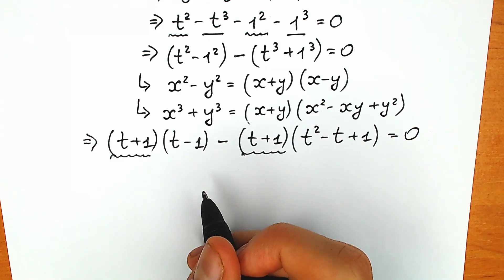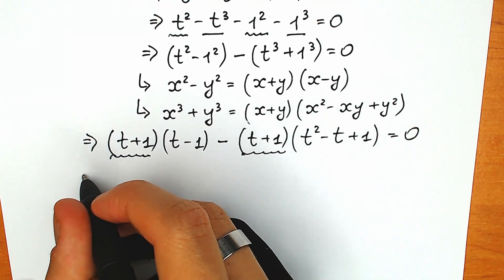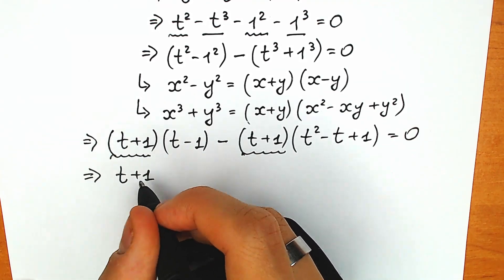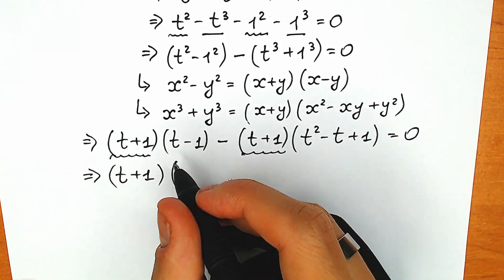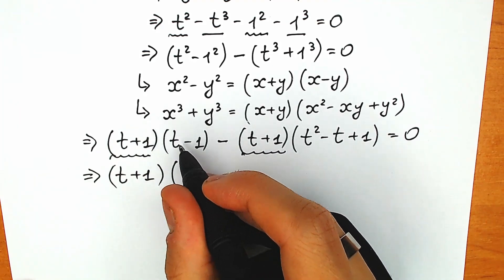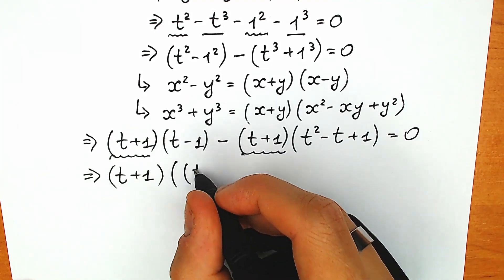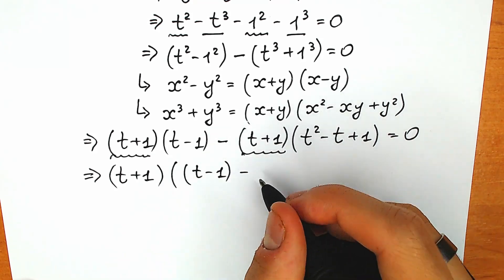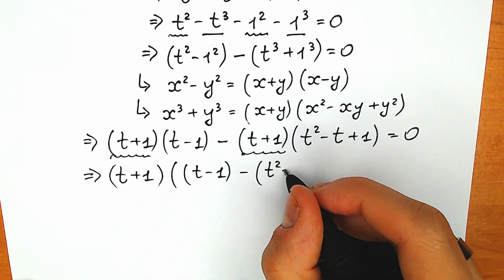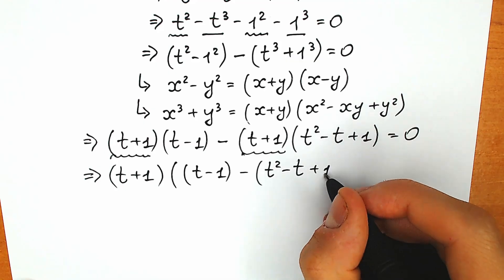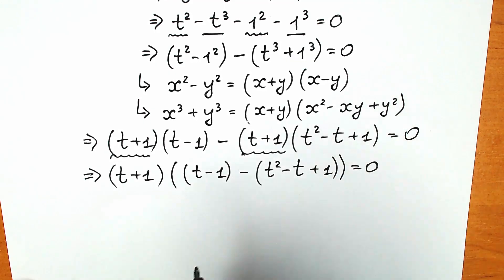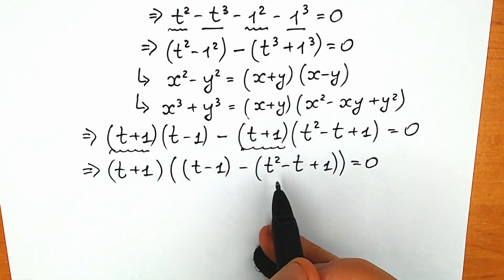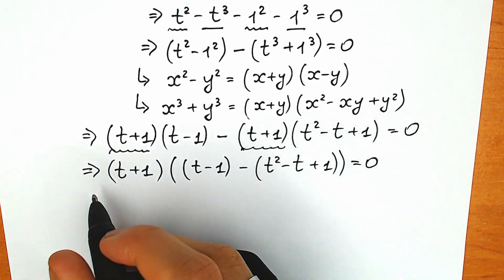We have the same expression t plus 1 appearing in both terms, so we can easily factor it out as a common factor. We factor out t plus 1, and as a result, in the first parenthesis we have t minus 1, and in the second we have minus the quantity t squared minus t plus 1. So we have factored our expression.